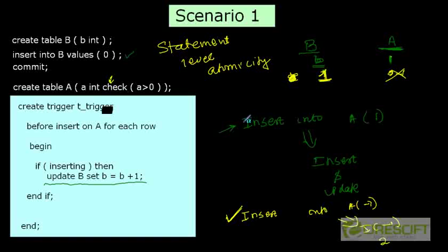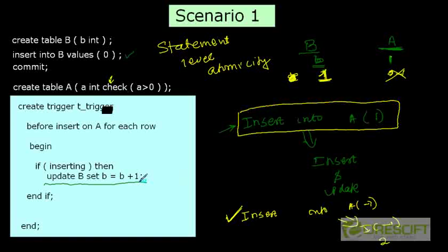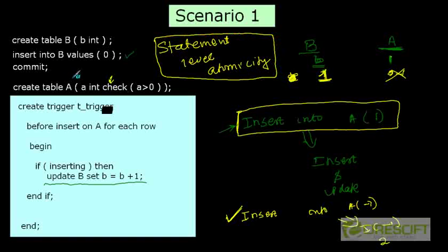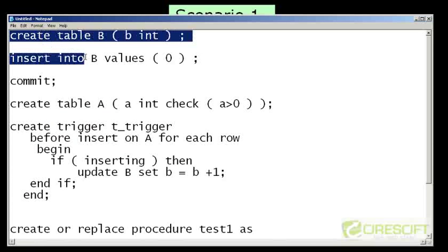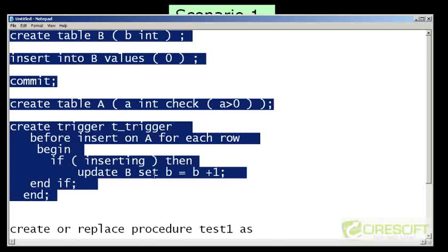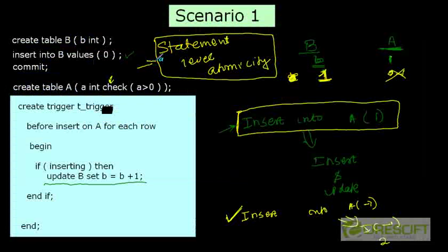The key point here is that the insert statement generated one more additional statement — the update — because of the trigger. If the insert is successful, then the update will also be done. But if the insert fails for whatever reason, then the triggered update is also going to be rolled back. This gives us statement-level atomicity. You can try this script, which will be available on the website or from this video, and try inserting minus one to see what happens.